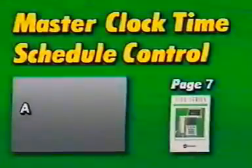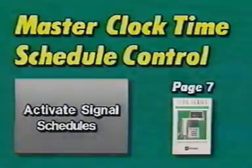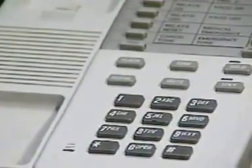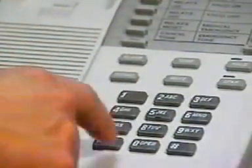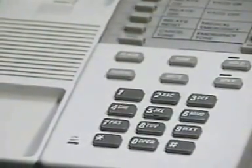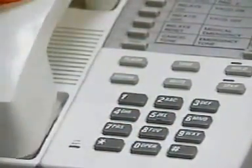Now we'll turn to page seven for master clock time schedule control functions. Here's how to activate signal schedules. To activate signal schedules, lift the handset and press pound five one through pound five eight for schedules one through eight. Press star and hang up. To restore all signal schedules to automatic operation, lift the handset, press pound five nine, then hang up. To deactivate signal schedules, lift the handset and press pound five one through pound five eight for schedules one through eight. Press pound again and hang up.